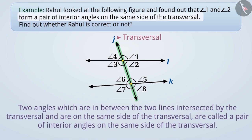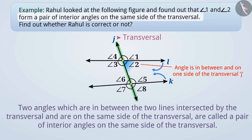If we consider angle 1 and angle 2, angle 2 is in between the lines L and K, and also on one side of the transversal J. But if we take angle 1, it is on the same side of the transversal where angle 2 is located.